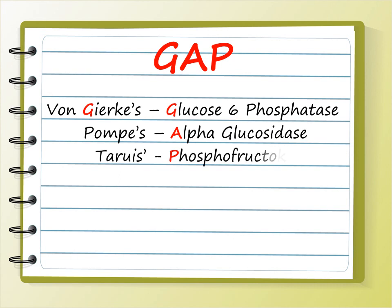The remaining three are Von Gierke, Pompe, and Tarui. Remember the acronym GAP: Von Gierke is glucose-6-phosphatase (G for G), Pompe is alpha-glucosidase — remember this is a lysosomal storage disease, unlike Gaucher's which is beta-glucosidase, Pompe is alpha-glucosidase. Tarui is phosphofructokinase.